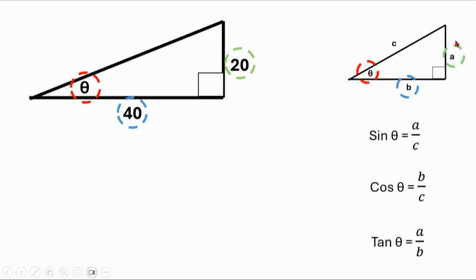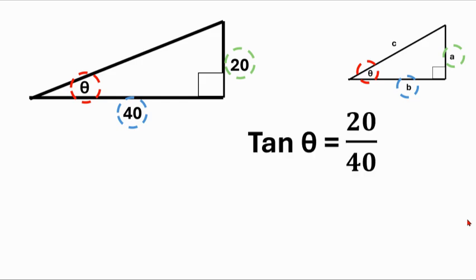On our little diagram here, that would be sides a and b. And so is there a function here that has a and b in it? Yes, there is, there's tangent. So now tangent of this angle theta is equal to 20 over 40.